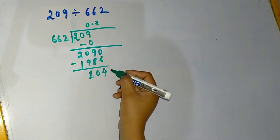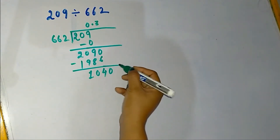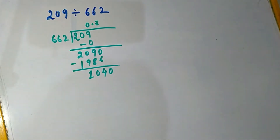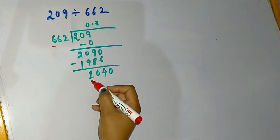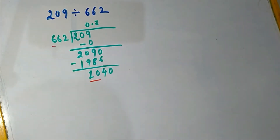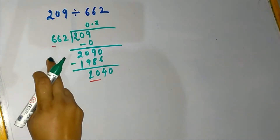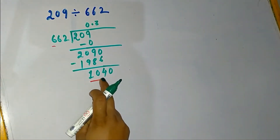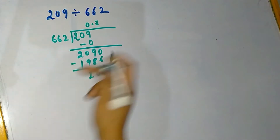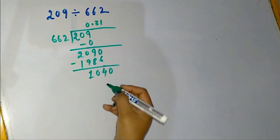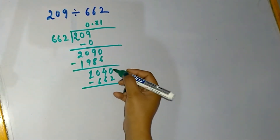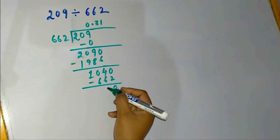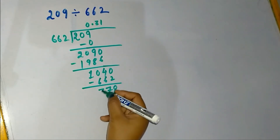Again, due to this decimal point, we are allowed to put one zero here. Now we have the number 1040. We check the last digit of the divisor, 6, against the last two digits of 1040, which is 10. The number less than 10 in the table of 6 is 6 itself, so we take 1 times 662. Let's write down 1 and subtract 662: 10 − 2 is 8, 13 − 6 is 7, 9 − 6 is 3.